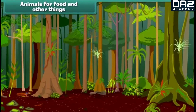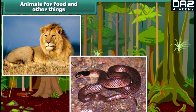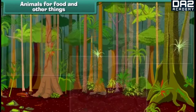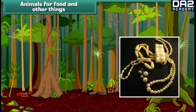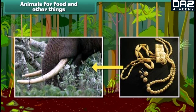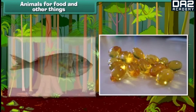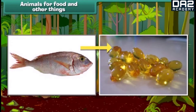Animals are useful to us. We get fur and leather from animals like lions, snakes, and crocodiles. Beautiful ornaments and showpieces are made from elephant teeth. The oil extracted from the liver of some fish is used in medicines.